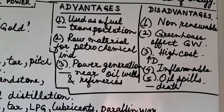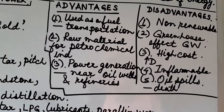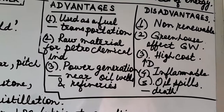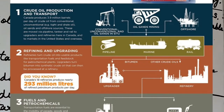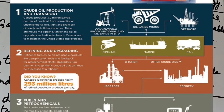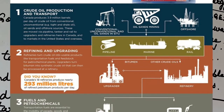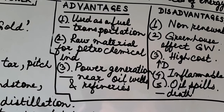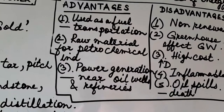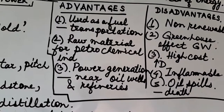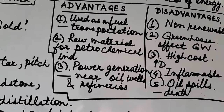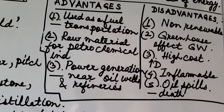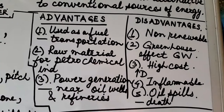Moving on to the advantages of petroleum: it is mainly used as a fuel and for transportation. It is also used as a raw material for the petrochemical industry — synthetic rubber, paints, varnishes, and synthetic fabrics all come from petroleum. Petroleum is also used for power generation, mainly in regions where there are oil fields and refineries.